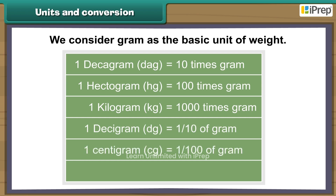One centigram (cg) is equal to one hundredth of a gram, and one milligram (mg) is equal to one thousandth of a gram.